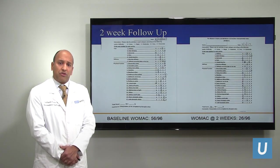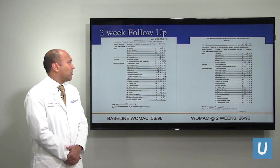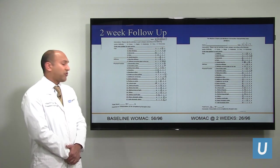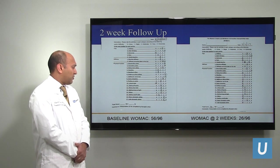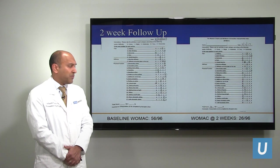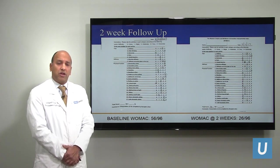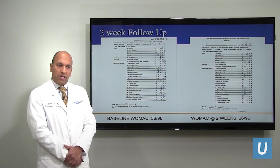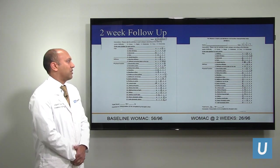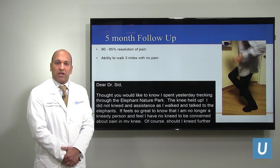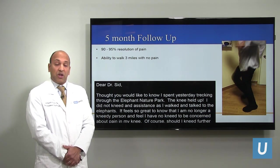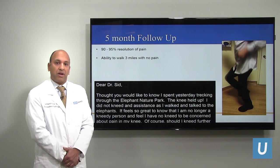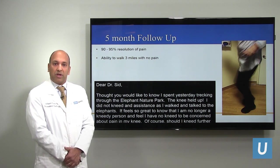What we typically do for every person who undergoes this procedure is get a pain score using the WOMAC pain scale — a 96-point scale well-validated for people with arthritis. This specific patient had a score of 56 at baseline. After two weeks, his score decreased from 56 down to 26. Most importantly, he had marked relief of his pain and a significant increase in his overall physical activity — you can see him actually jogging in place at 89 years old, only two weeks after the procedure. Before, he was able to walk several blocks; now he's able to walk three miles without any significant discomfort.